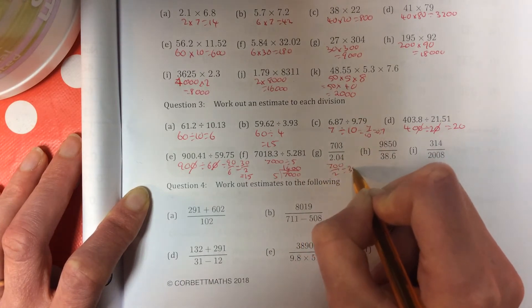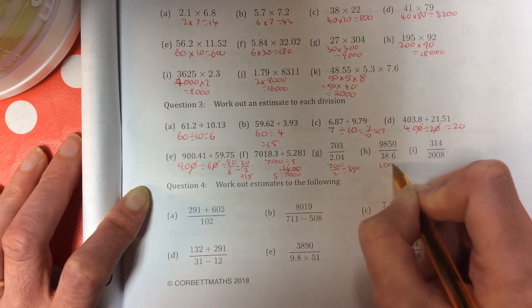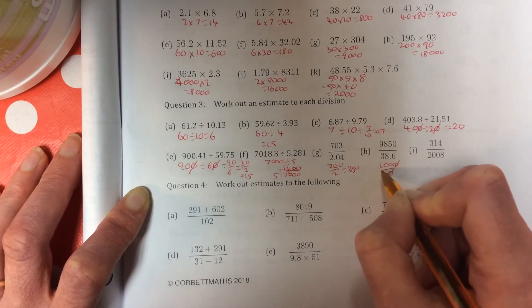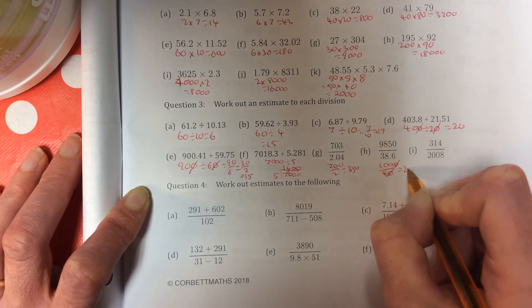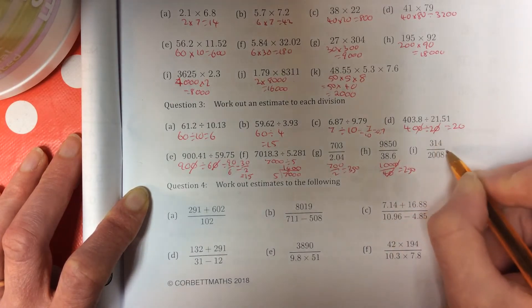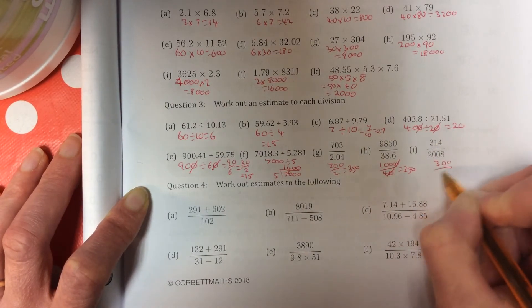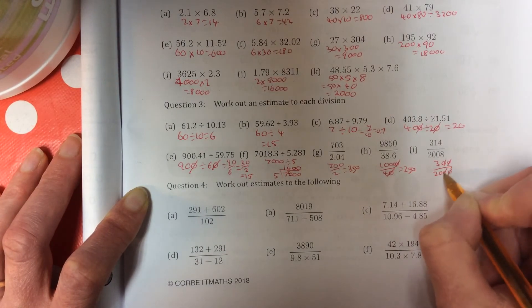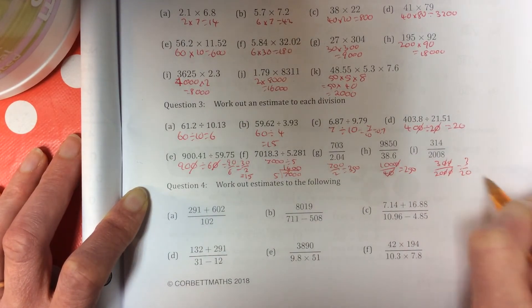700 divided by 2 is 350. 10,000 divided by 40. Take a nought off, so it's 1,000 divided by 40, 250. 300 divided by 2,000. You can take two noughts off top and bottom to give you 3 over 20.